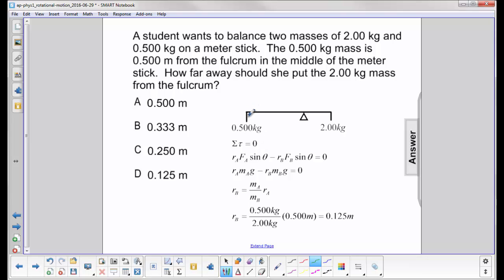This mass here, the 0.500 kilogram, is going to have a positive torque. That's mass A because it's going to try and rotate it counterclockwise. The 2 kilogram mass, again in the absence of anything over here, will rotate it clockwise, so that's negative. So B here is the 2 kilogram mass.